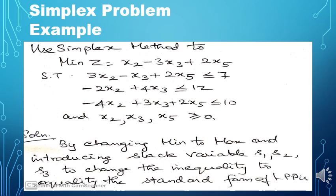Here the main objective function is minimize z. So the first thing is we have to change minimize z to maximize z. For that we change z to z* and the right-hand side will be multiplied by minus 1. And all the constraints will be changed by adding a slack variable s1, s2, s3 since all of them are inequalities — we are going to change the inequality to equality.